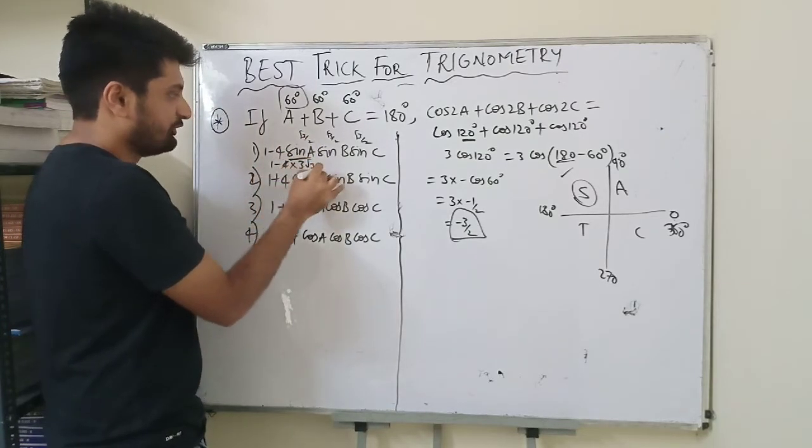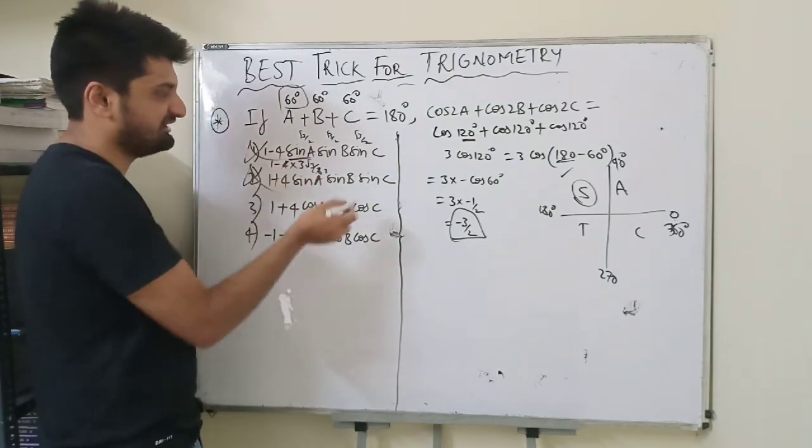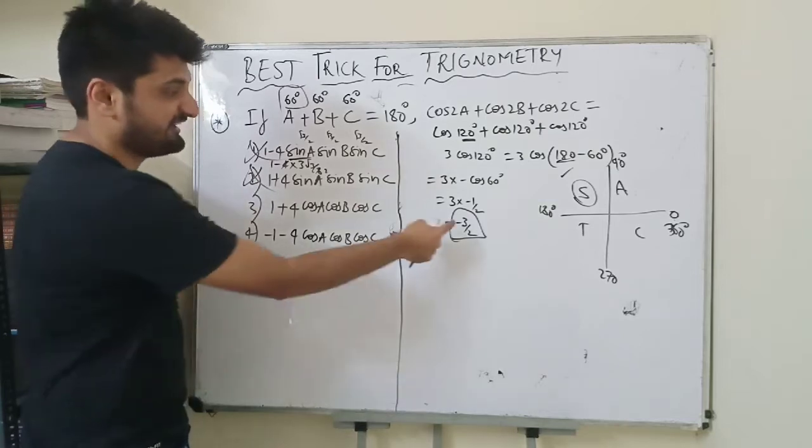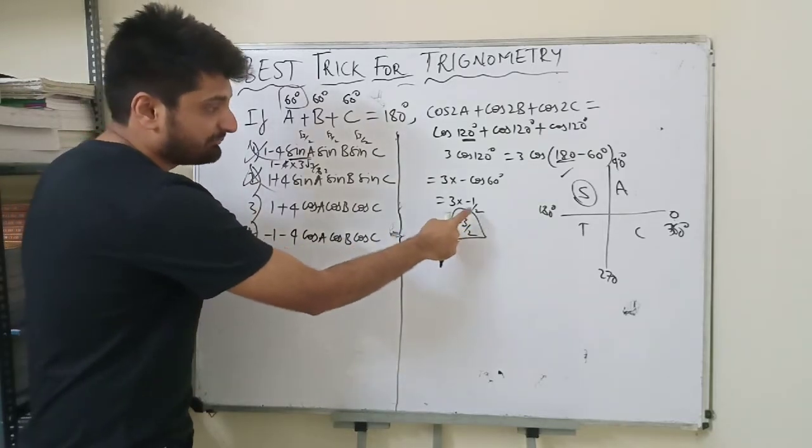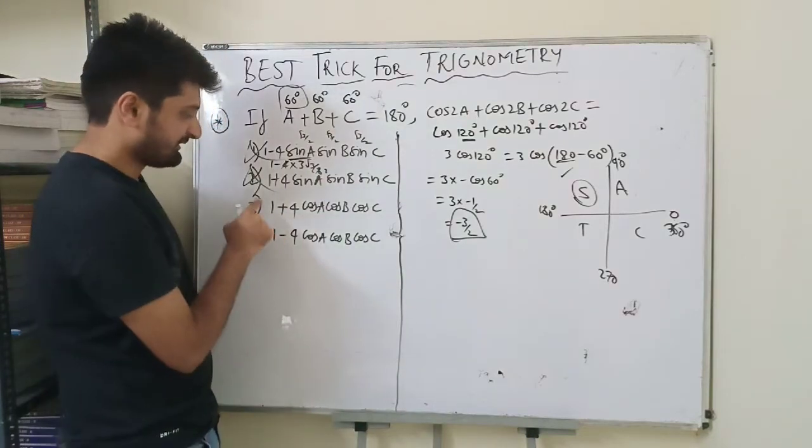Even this won't satisfy because the sin value is giving us a square root value, whereas here we are getting a rational number which is minus 3 by 2.